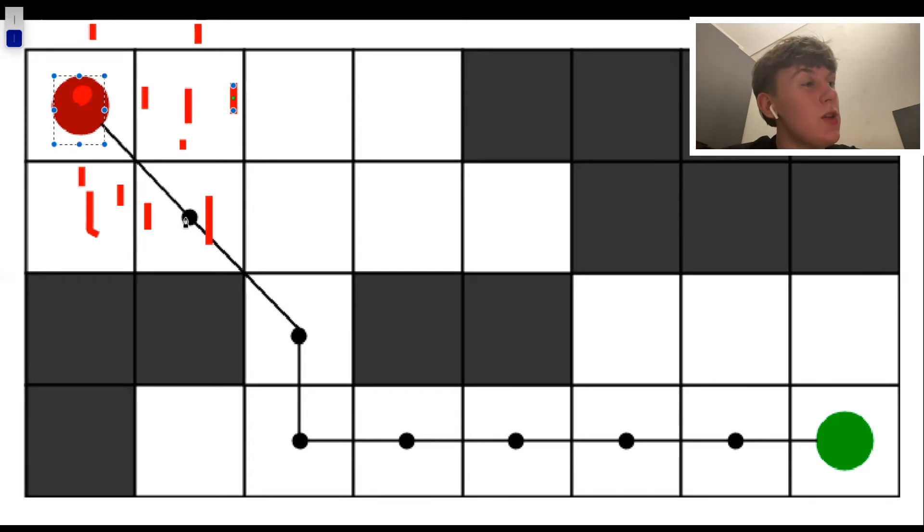Now we need to combine our adjacent node score, i.e. one, with a heuristic that tells us the distance to the end node. So for example, the diagonally downward node might have a distance from the end node of seven. Combine the seven with our one from the adjacent score and we get an eight.